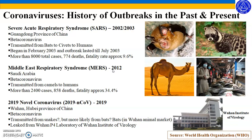Another coronavirus outbreak was Middle East respiratory syndrome, or MERS, which occurred in 2012. It started in Saudi Arabia and quickly spread to several countries. MERS is also a beta coronavirus, and the virus appears to have been transmitted from camels to humans — either through eating camels, exposure to camels, or drinking camel milk. As of this video, there are more than 2,400 cases of MERS and 858 recorded deaths, with a fatality rate of approximately 34.4% — a very high fatality rate.